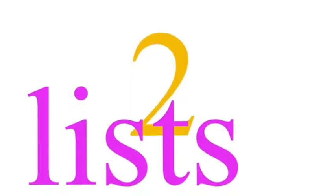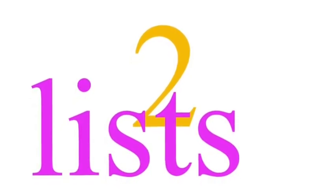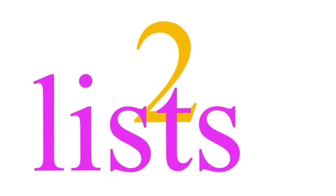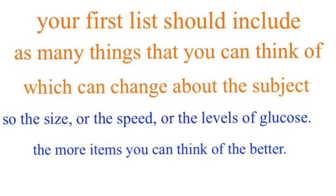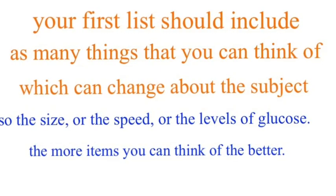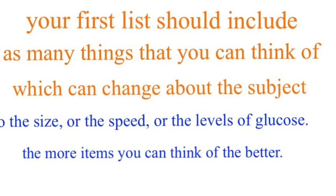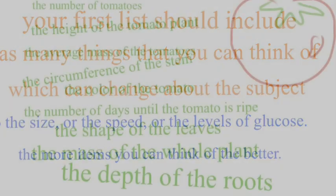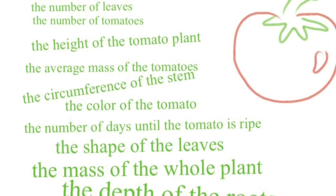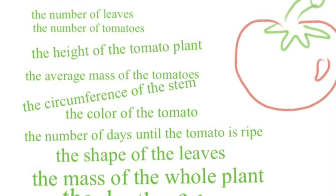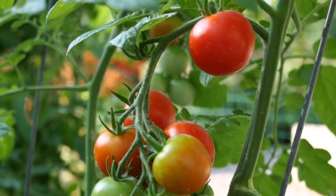Now that you understand different kinds of questions, let's talk about the actual method for writing this. Just try my method. First thing you do is make two lists. The first list is really everything you can think about the subject you're studying. So maybe the subject is tomato plants — the height of the tomato, the amount of sugar in it, the color, the amount of tomatoes it makes, the circumference — all these different facets of the tomato.